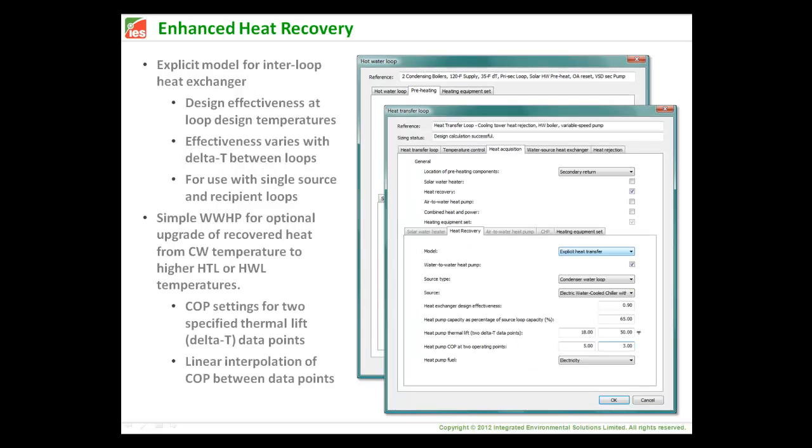Then if you go to the explicit model for interloop heat exchange, you actually then have a model heat exchanger between the loops with a design effectiveness, which is assumed to be at the design temperatures of the respective loops that you're connecting. Because this is connecting two loops, then it only allows one source loop, in this case, and not two of them. The effectiveness varies with the delta T between those loops. And then there's also the water-water heat pump option. In this case, it's a little bit more sophisticated, not still a full-on water-water heat pump model, but it provides two data points that you can set in terms of the thermal lift between the loops and two COPs associated with those two data points. And then the COP is interpolated between those two data points when the thermal lift varies from the two data points that you've given it.